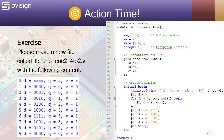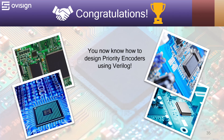As a challenge, you could try to switch lines 73 and 76 from prio_enc_2_4_to_2, then recompile and re-run the simulation. Do you see the same results in the console or different ones? Congratulations — you now know how to design priority encoders using Verilog.